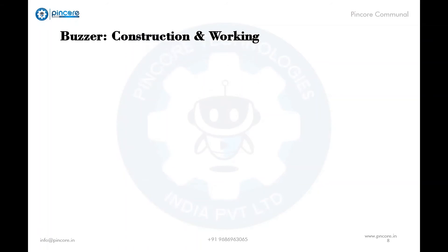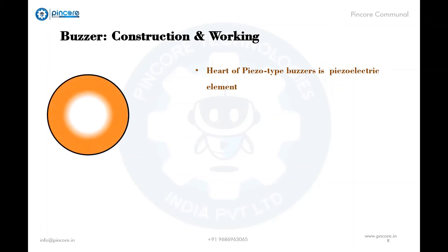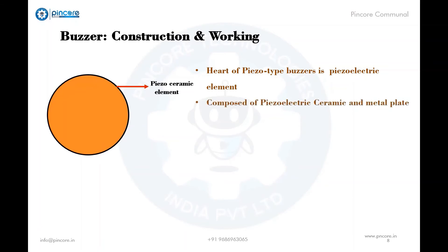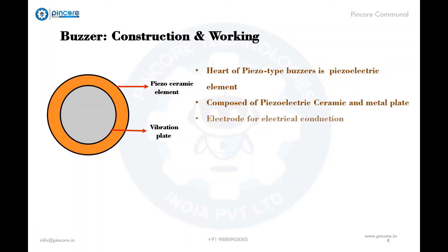Let's understand the construction and working of the buzzer. At the heart of all piezo-type buzzers is the piezo electric element. This piezo electric element is composed of a piezo electric ceramic and a metal plate, which is held together with adhesive. This metal plate is also known as the vibration plate. Both sides of the ceramic plate contain an electrode, which is used for electrical conduction purposes.